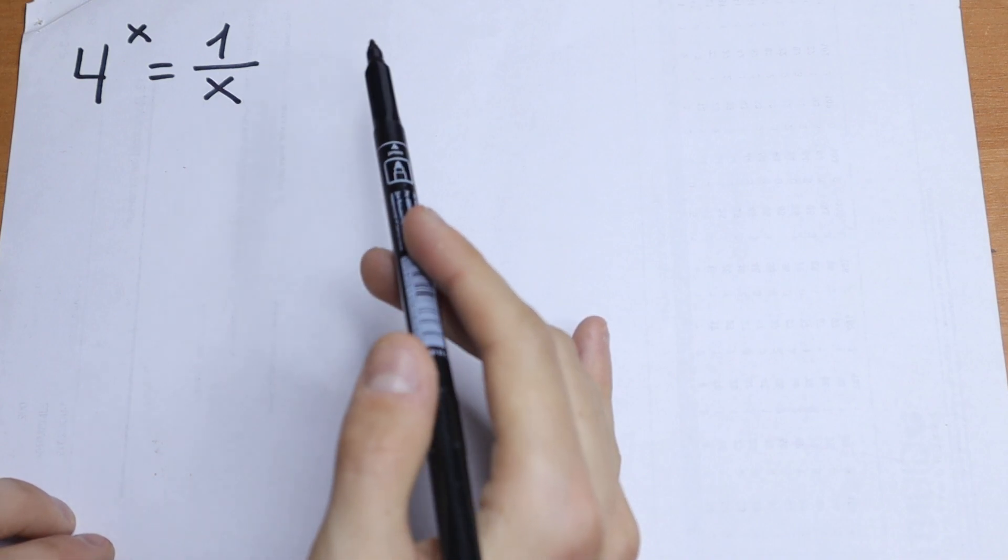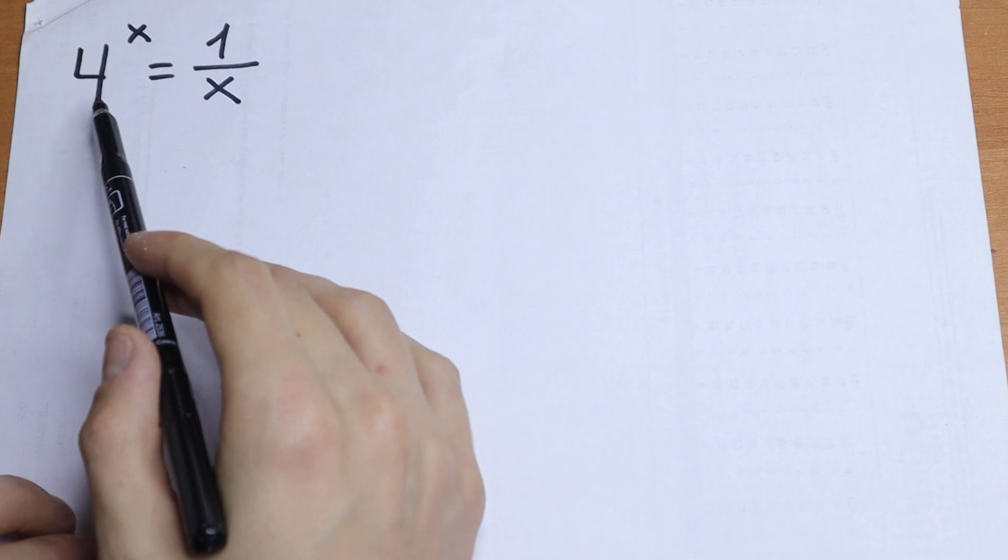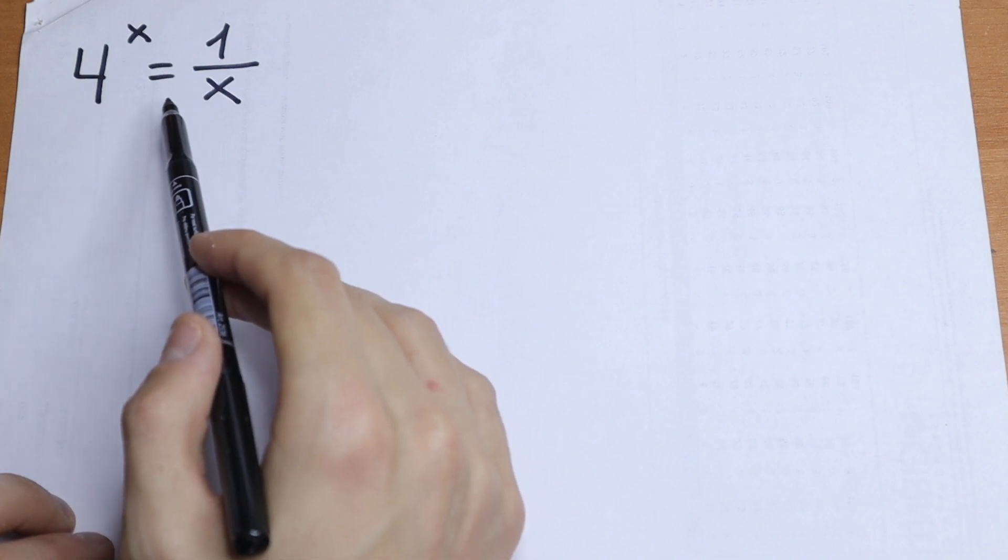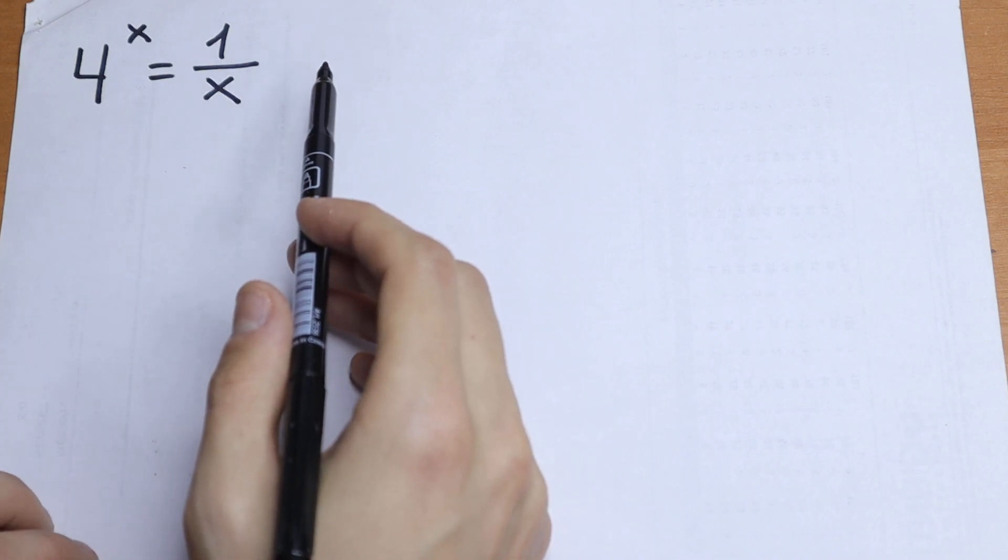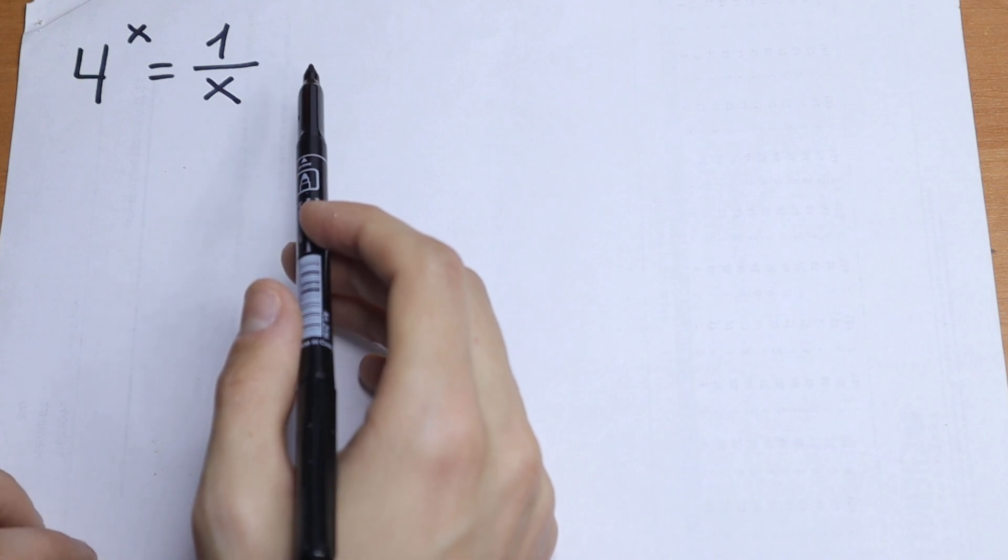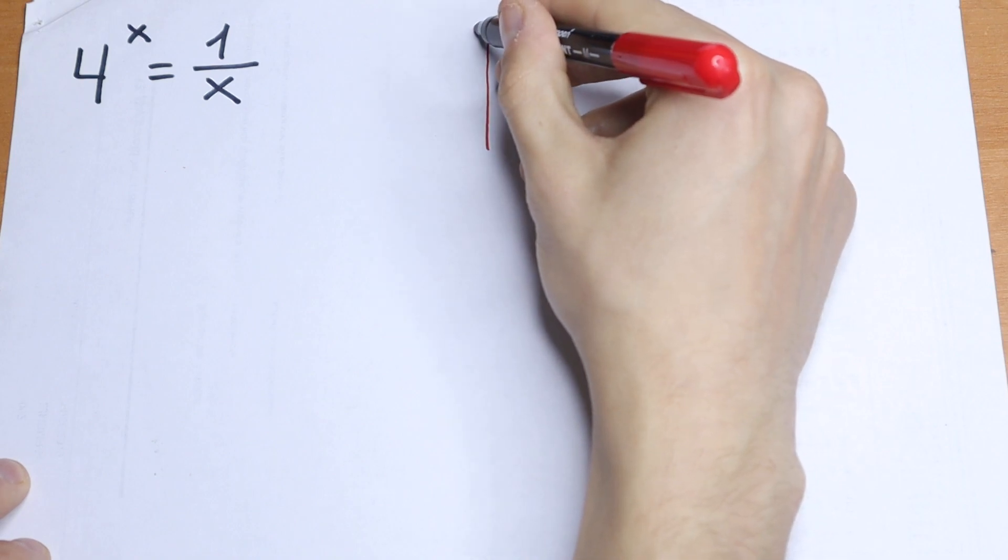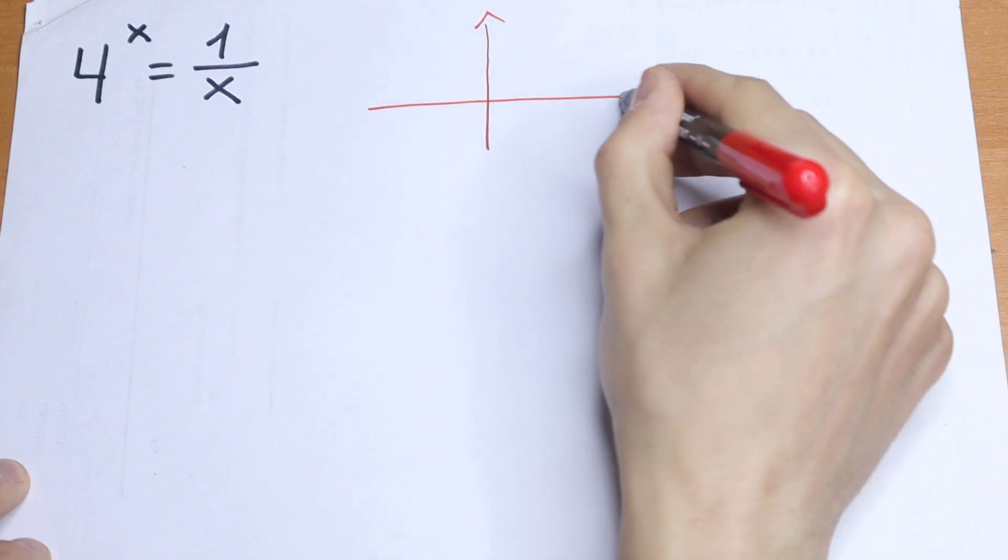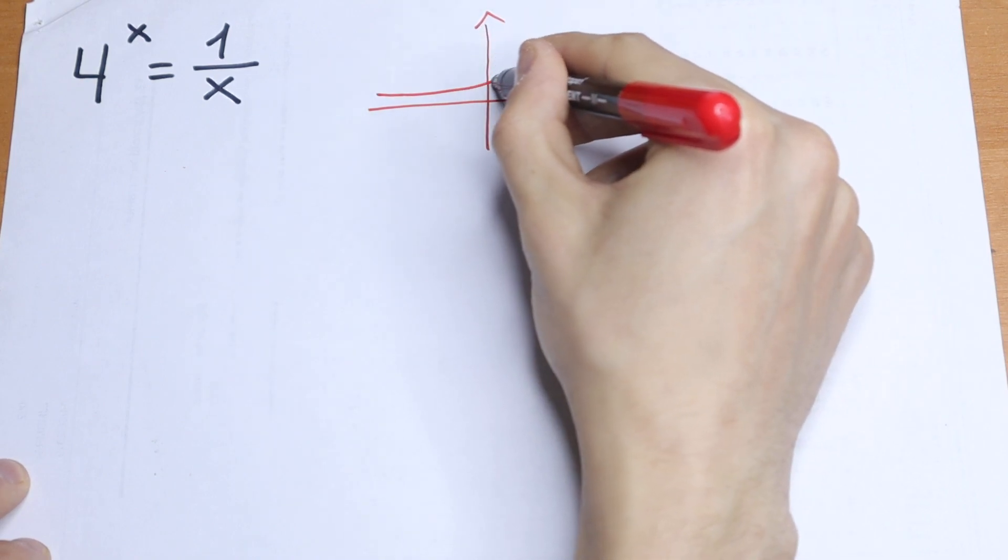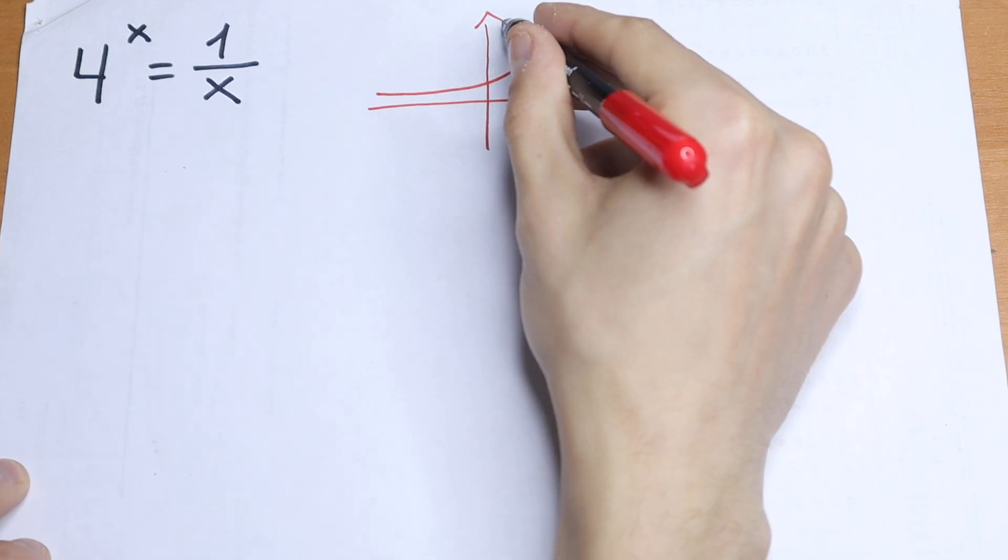So let's try to solve it. First of all, I see that on the left I have an exponential function and on the right I have a hyperbola. So it's really good to draw a graph. Let's do this at first. We will have our exponential function and on the right we will have a hyperbola.